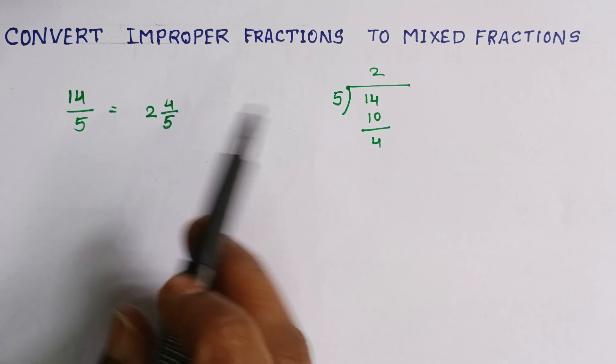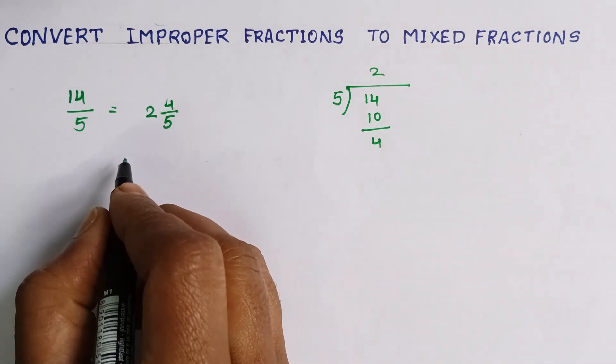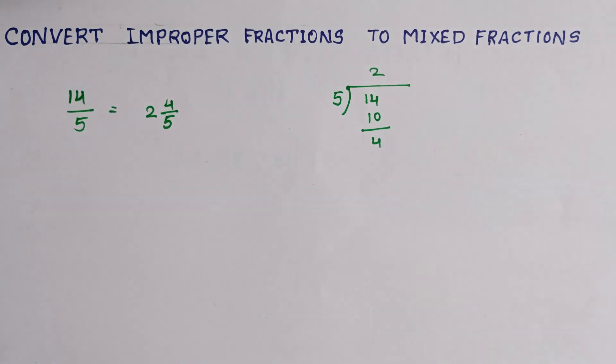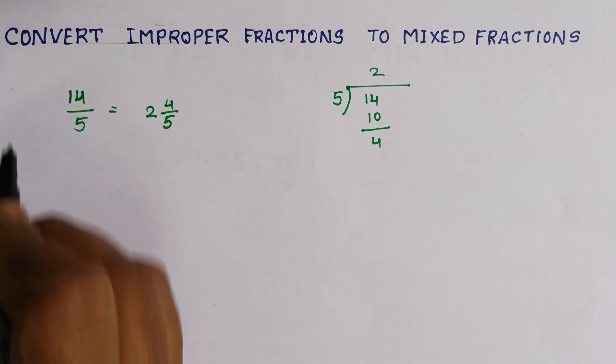Plus 4 is 14. This is the way we can convert improper fractions to mixed fractions. We can see one more problem, one more example.